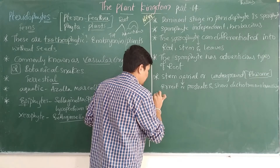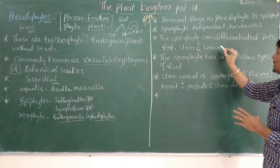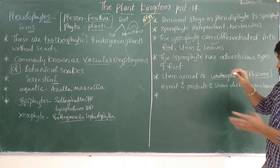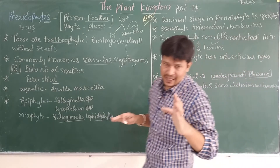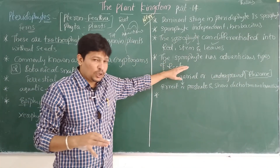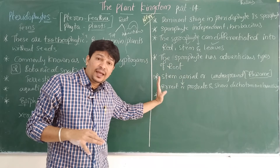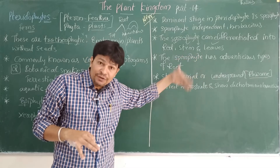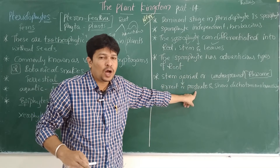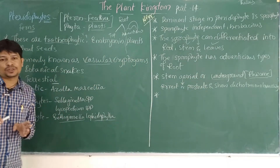Now coming to the leaves — the sporophyte has all three parts: root, stem, and leaves. The leaves are of two types: microphyllous or macrophyllous. Micro means small and phyllous means leaves, so microphyllous means small leaves. Macro means large, so macrophyllous means larger leaves.